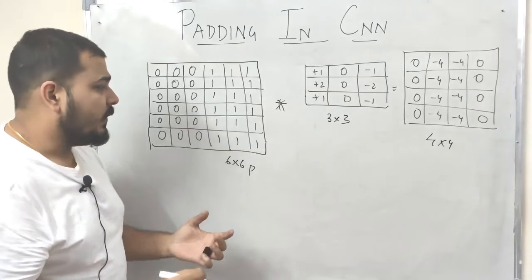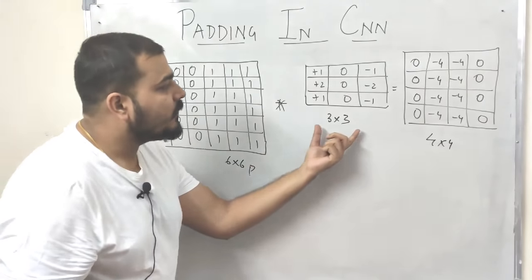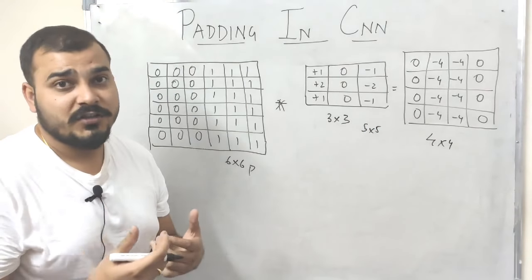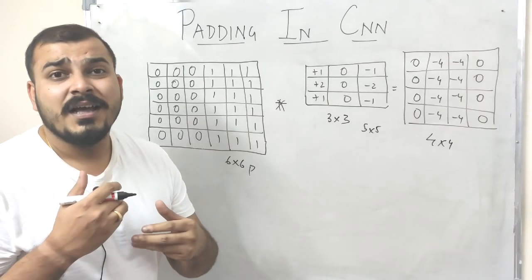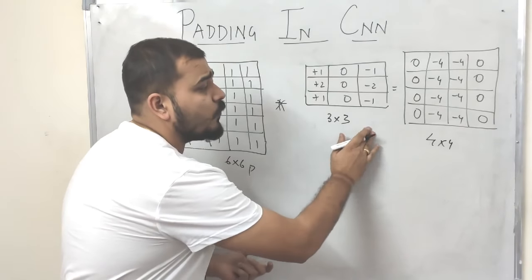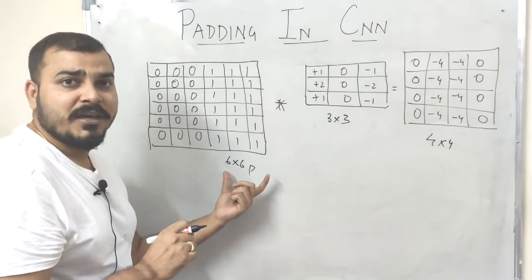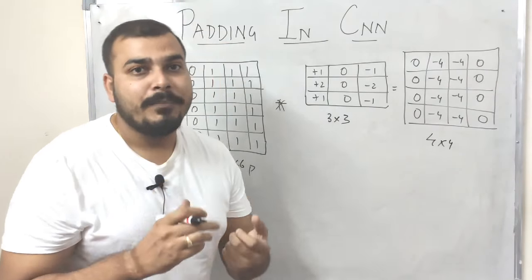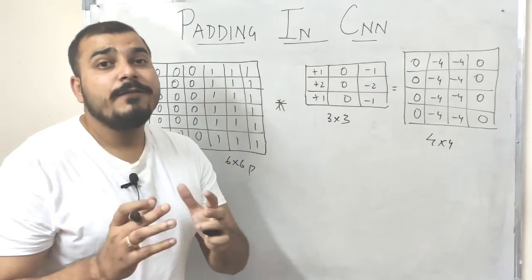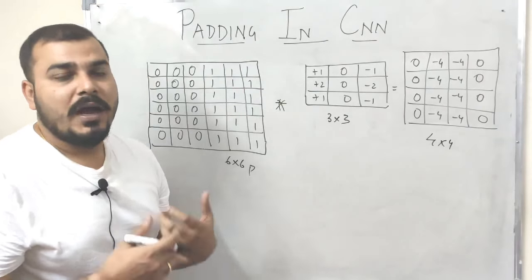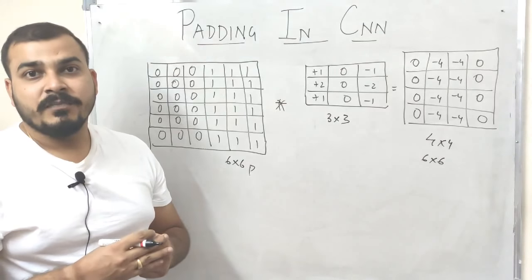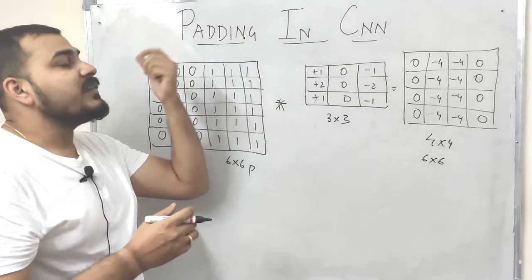One thing to note: initially I gave a six cross six pixel image and when I applied a filter of three cross three, I got a four cross four output. The filter size may change — we may have a five cross five or seven cross seven filter depending on the type of operation. What is happening here is that we are losing some amount of data as it passes through the filter. So if we want a six cross six output from a six cross six image, we have to apply something called padding.